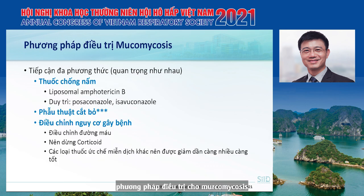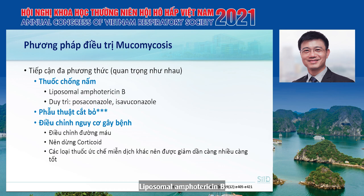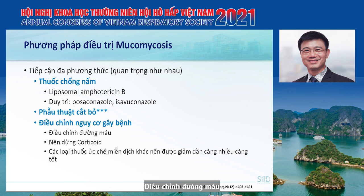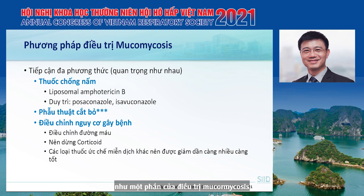The therapeutic approach for mucormycosis requires a multimodal strategy. First, antifungal treatment should be started—the drug of choice is liposomal amphotericin B. Once the patient improves, antifungal can be de-escalated to posaconazole or isavuconazole. Surgical debridement is also very important. Correction of the underlying disease—controlling diabetes and discontinuing or reducing the dose of corticosteroids or immunosuppressive drugs—is equally essential.